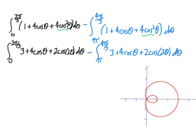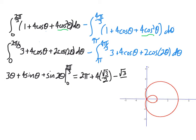Finally we get to doing the integral. For our first one, the area inside the outer loop, we have 3 theta plus 4 sine theta plus sine of 2 theta from 0 to 2 pi over 3. If we evaluate that, we have 2 pi plus 4 times the sine of 2 pi over 3, which is 4 times square root of 3 over 2, plus the sine of 4 pi over 3, which is minus square root of 3 over 2. So we have 2 pi plus 2 square root of 3 minus square root of 3 over 2.